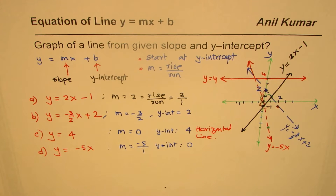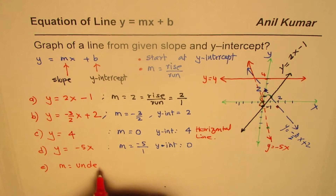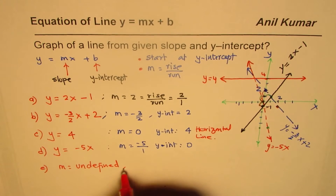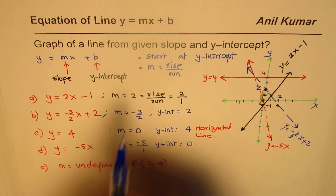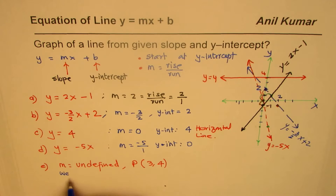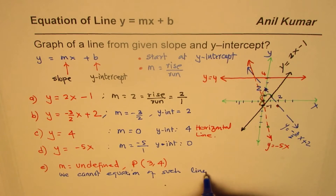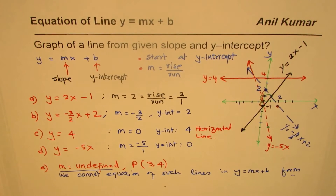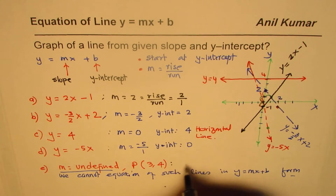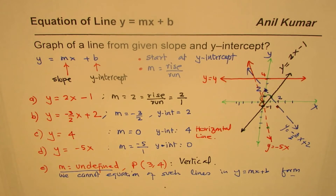Now let me give an example where the slope is undefined. If slope m is undefined and we have a point P = (3, 4), we cannot write the equation in slope-intercept form y = mx + b because the slope is undefined. An undefined slope means a vertical line — this is an exception to the rule we've been following.